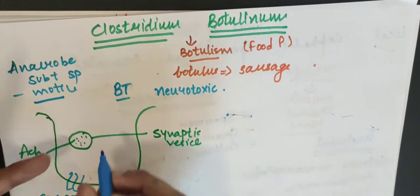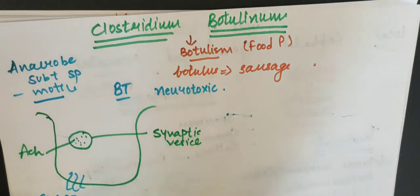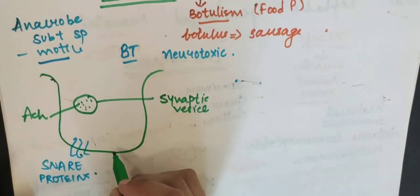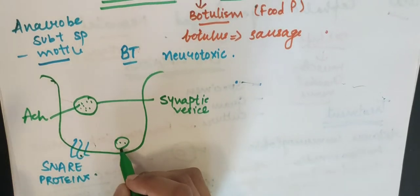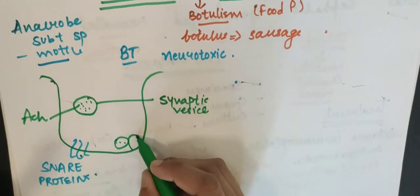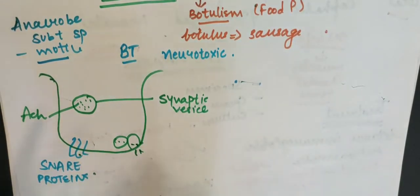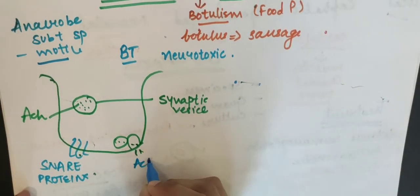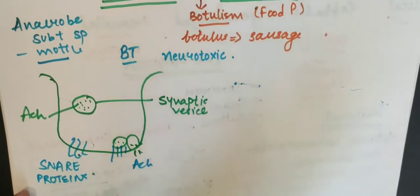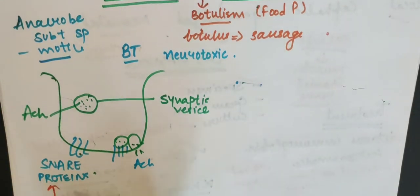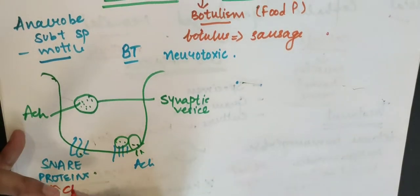What happens? This is synaptic vesicle. Normally what happens? It's because of their help, because of the snare proteins, acetylcholine is attached and the contents are released. Suppose the acetylcholine is released with the help of the snare proteins. What is our botulinum? It breaks the snare complex. Cleaves it.